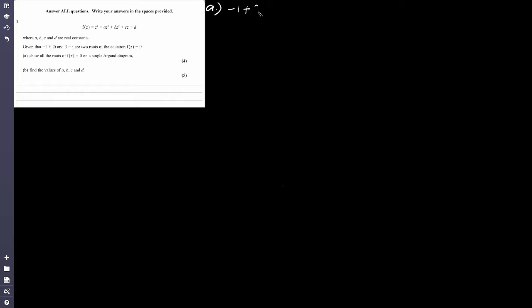We're given a couple of roots of the equation f(z) = 0. The first part asks us to show all the roots of f(z) = 0 on a single Argand diagram for the first four marks. So let's write down the roots that we do have: minus 1 plus 2i, and we also have 3 minus i.